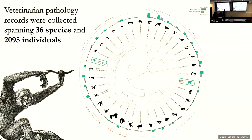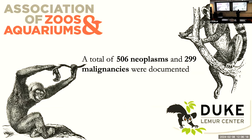We have pathology records for 36 species of primates. In putting our database together, one of the great things about the zoo accreditation format in the United States is that all of the species in our database have to go through a necropsy. As part of your accreditation in the United States, all of the species under zoo care go through a necropsy.